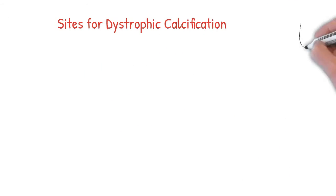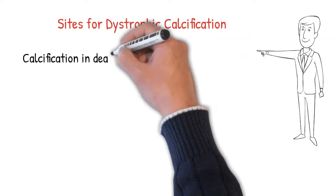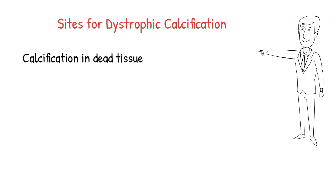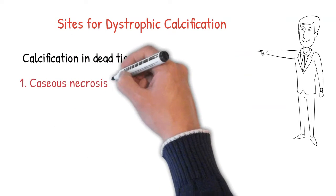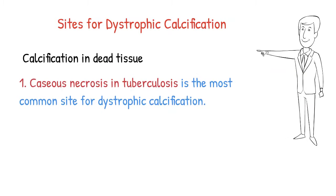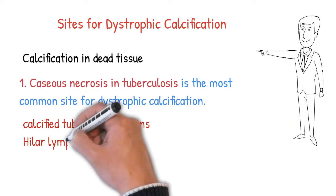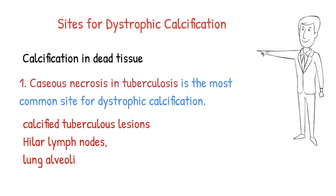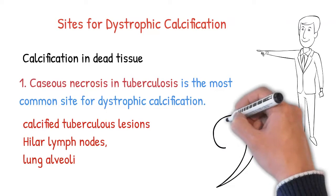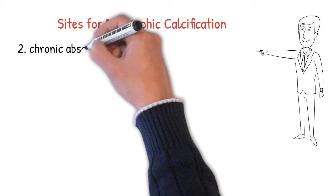Now, where does dystrophic calcification occur? The most common example is tuberculosis, which mostly occurs in the lungs. It produces caseous necrosis, and in that caseous necrosis calcium salts are deposited, forming a tubercle-like structure. Calcium also deposits into the hilar lymph nodes, causing lymph node calcification, and lung alveoli also become calcified in TB.